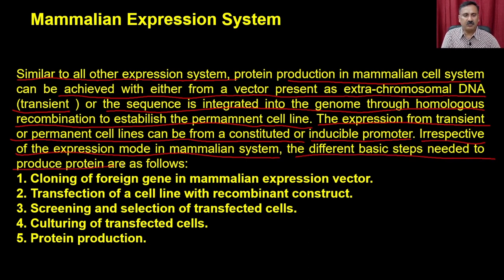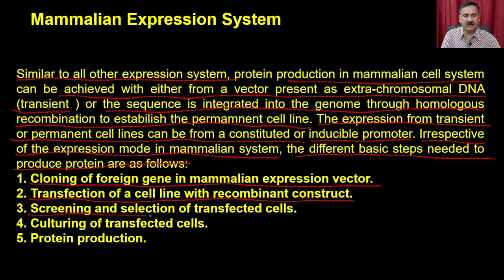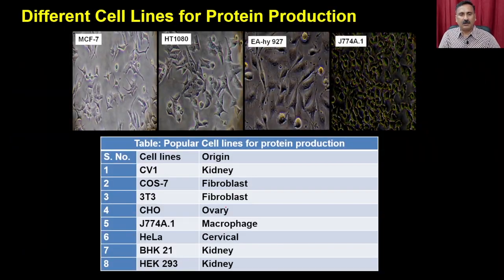Irrespective of the expression mode in the mammalian system, the basic steps to produce protein are as follows. In step one, you clone the foreign gene into the mammalian expression vector. In step two, you transfer the cell lines with the recombinant construct. In step three, you screen and select the transformed cells. In step four, you culture the transfected cells. In step five, you do the protein production — if it is an inducible expression system, you add the inducer; if constitutive, you culture the cells for cellular generation.